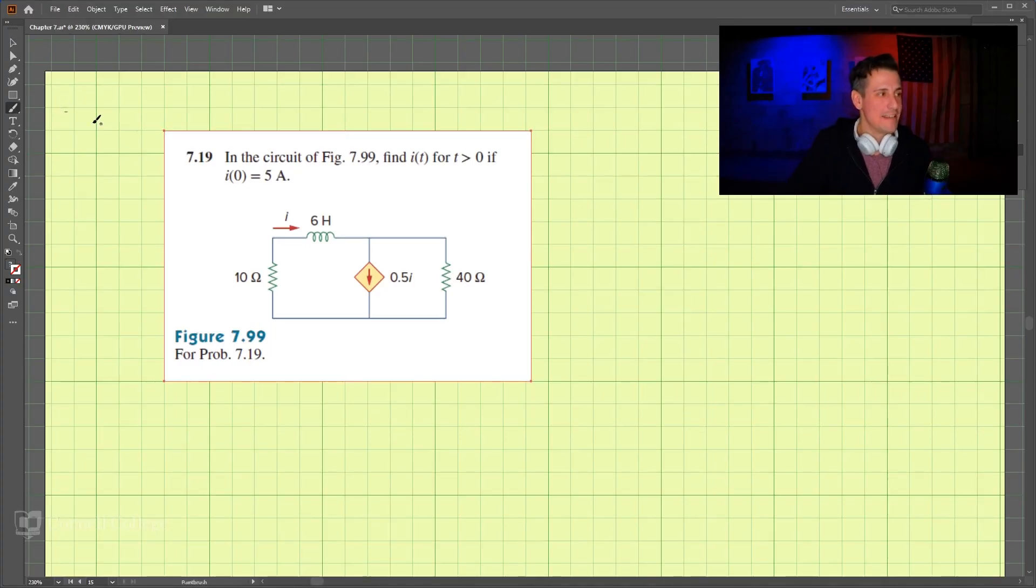This is problem 7.19 here, and we're looking for the current I for t greater than 0 if the current at t equals 0 is 5 amps.